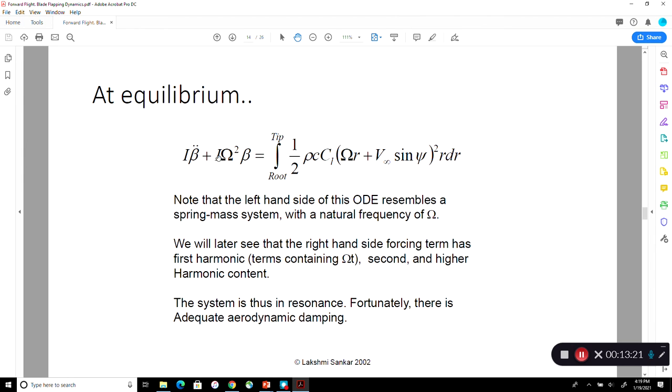Now this is like a spring mass system. Remember in classical dynamics, you would have studied mx double dot plus k times x equal to zero is a spring mass system. It's got a natural frequency of square root of k over m. So this is like a mass. This is like a spring. So this natural frequency is square root of i omega squared divided by i, which is simply omega. So this blade natural frequency is omega up and down. It's got a natural frequency.